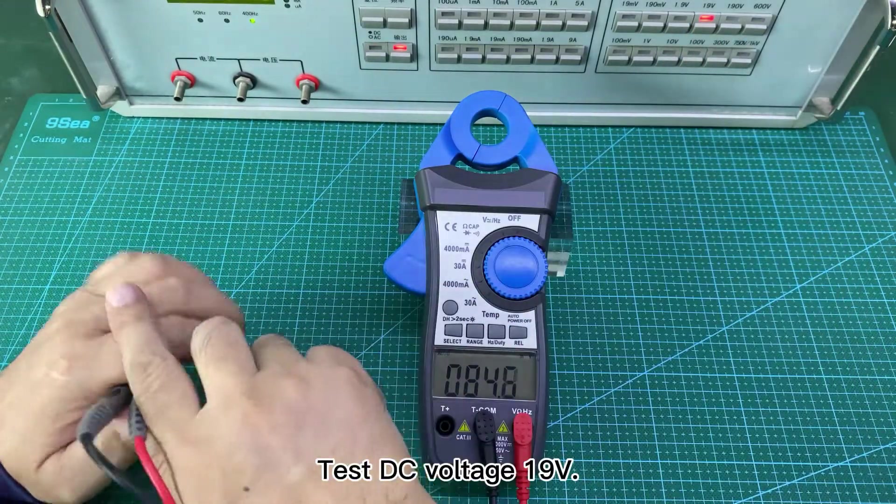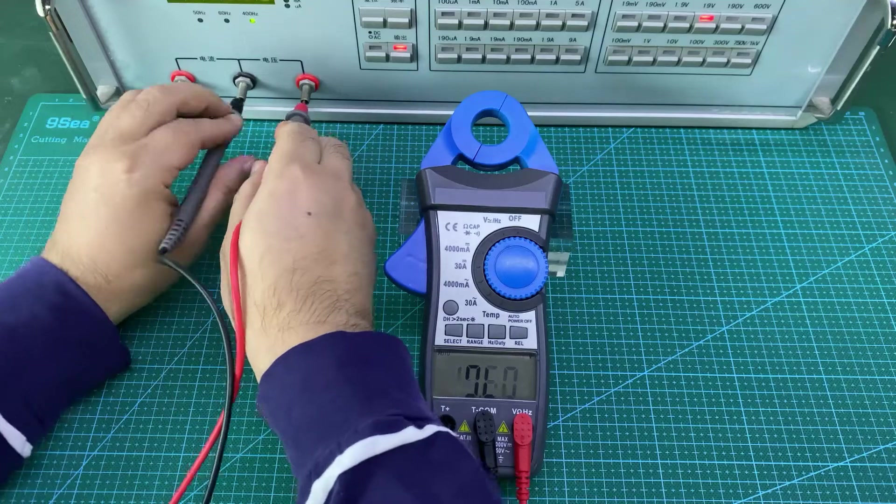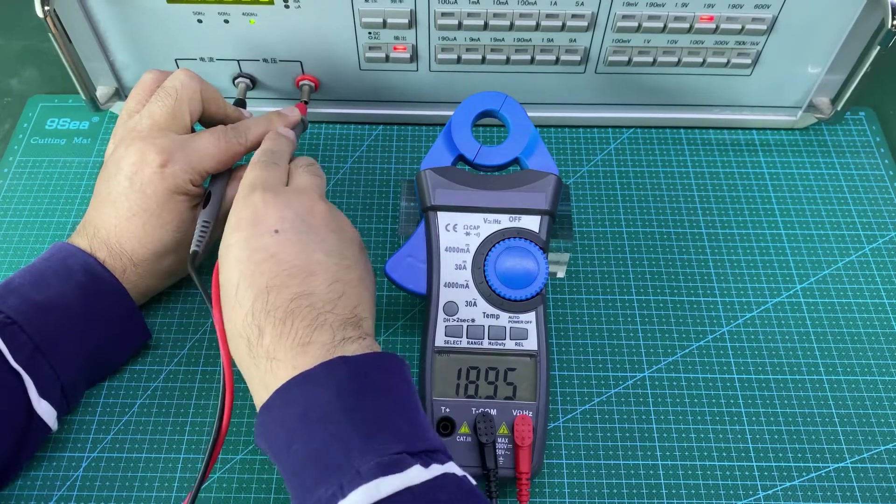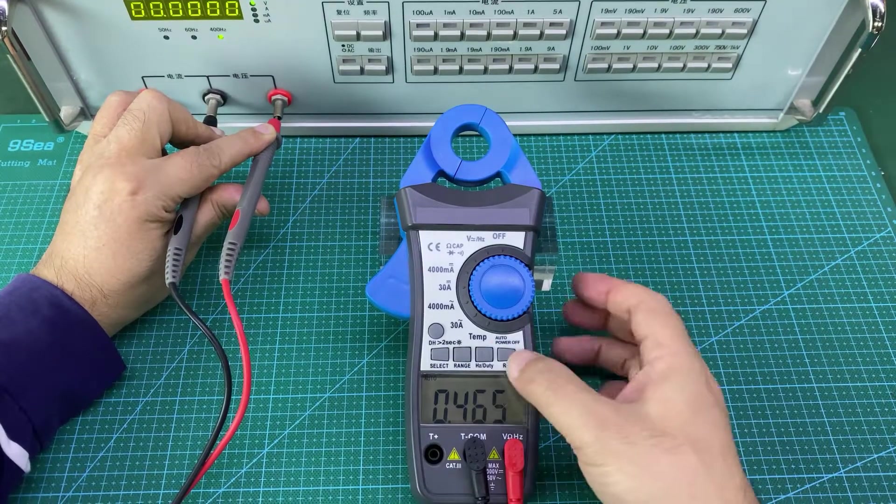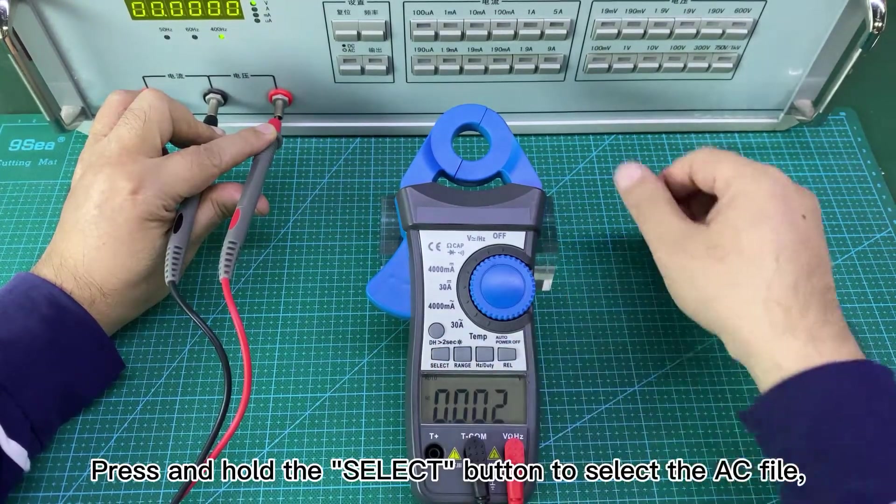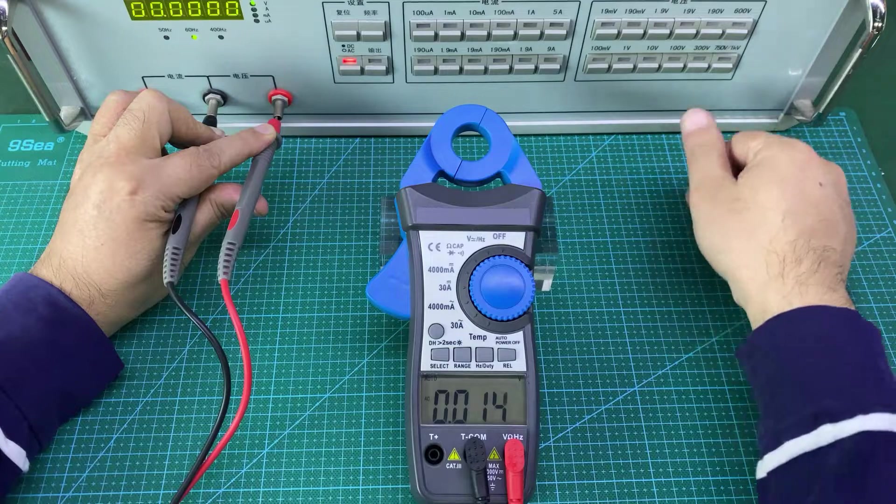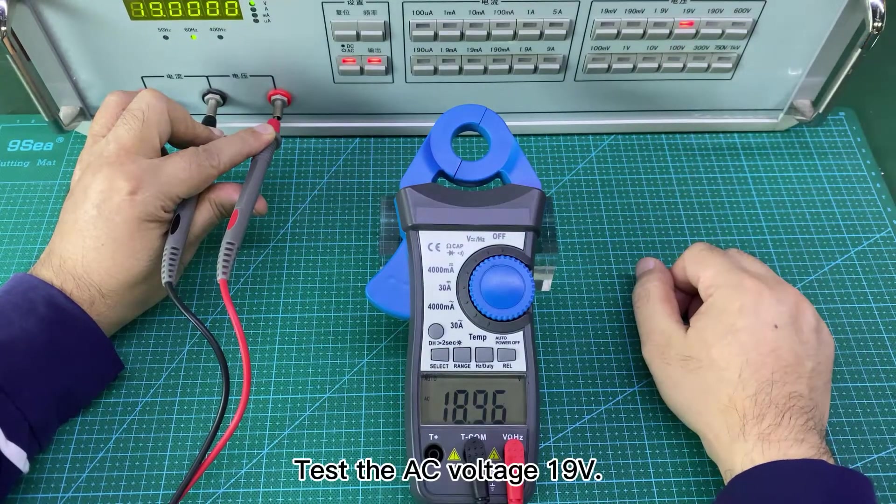Test DC voltage 19V. Press and hold the select button to select the AC file. Test the AC voltage 19V.